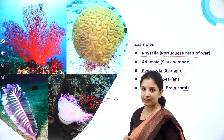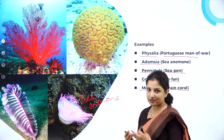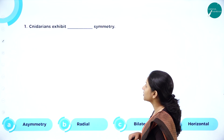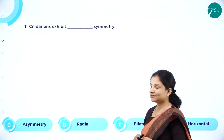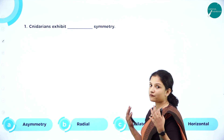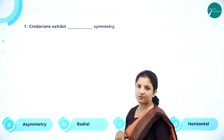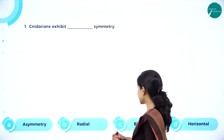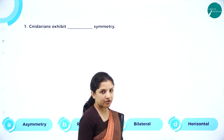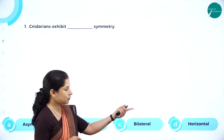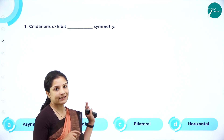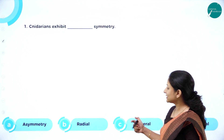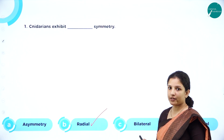Now let's look at some MCQs that can be framed under this topic. Question: Cnidarians exhibit dash symmetry. We know they have a symmetry — you can divide the body into two different halves. Is it asymmetry? No. Is it radial? We need to determine whether it is radial, bilateral, or horizontal. There is no such thing as horizontal symmetry. So we check whether it is radial or bilateral — and the answer is radial symmetry.